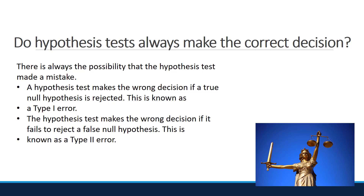Do hypothesis tests always make the correct decision? There is always the possibility that the hypothesis test reached an incorrect conclusion. A hypothesis test makes the wrong decision if a true null hypothesis is rejected — this is known as a Type 1 error. The hypothesis test makes the wrong decision if it fails to reject a false null hypothesis — this is known as a Type 2 error.